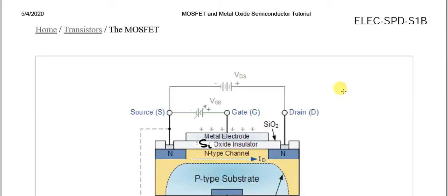Dear students, the topic is the Metal Oxide Semiconductor Field Effect Transistor, MOSFET. The full name is the Metal Oxide Semiconductor Field Effect Transistor. Topic code is ELEC-SPD-S1B.